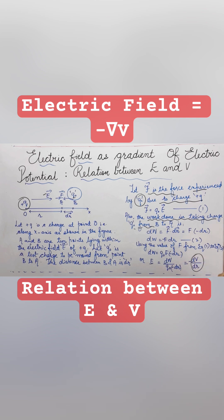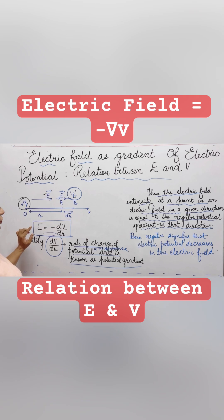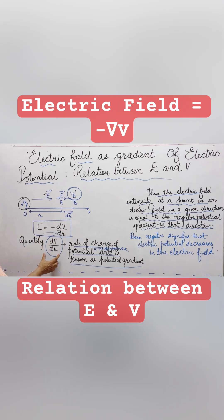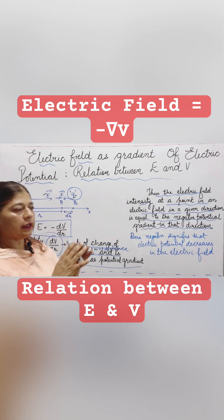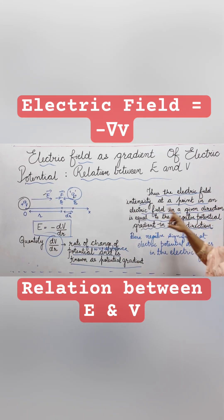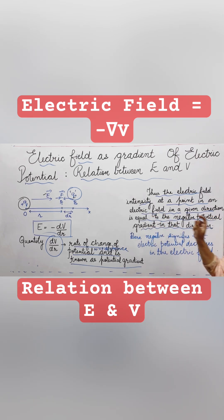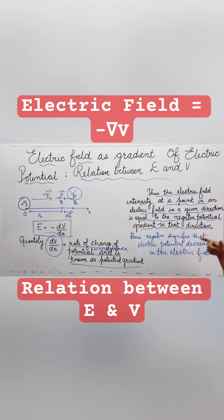The potential gradient dV/dr refers to the change of potential with respect to distance. So the electric field equals the negative of the potential gradient — this is the relation we have derived. In conclusion, the electric field intensity at a point in a given direction equals the negative potential gradient in that direction. The negative sign signifies that electric potential decreases in the direction of the electric field.